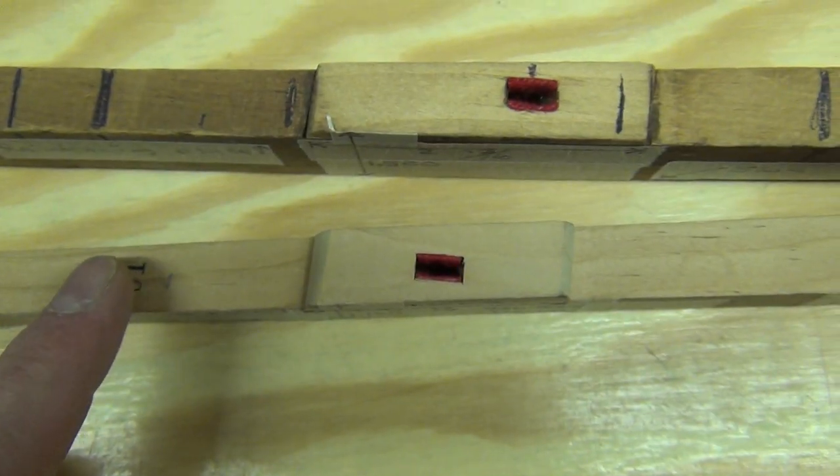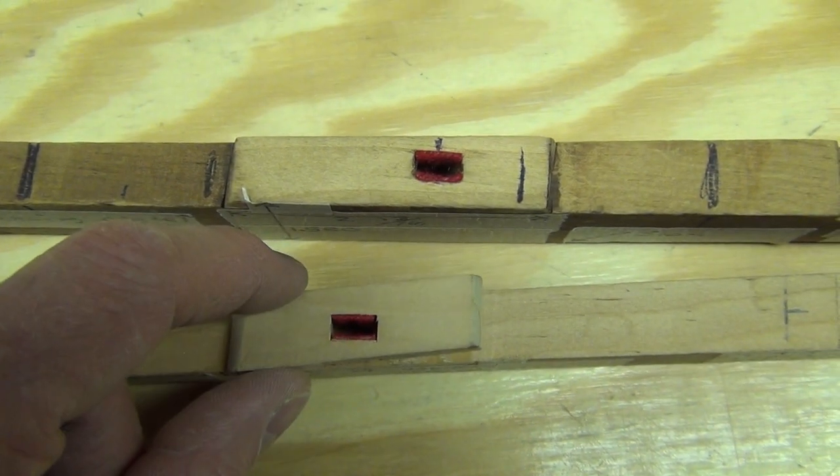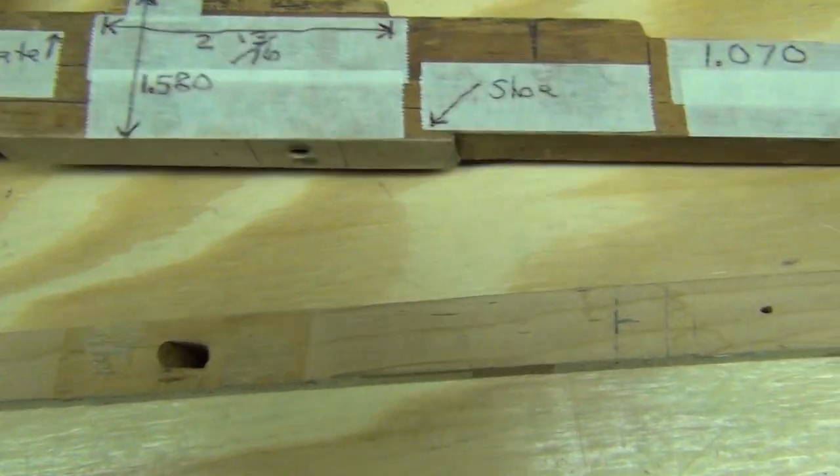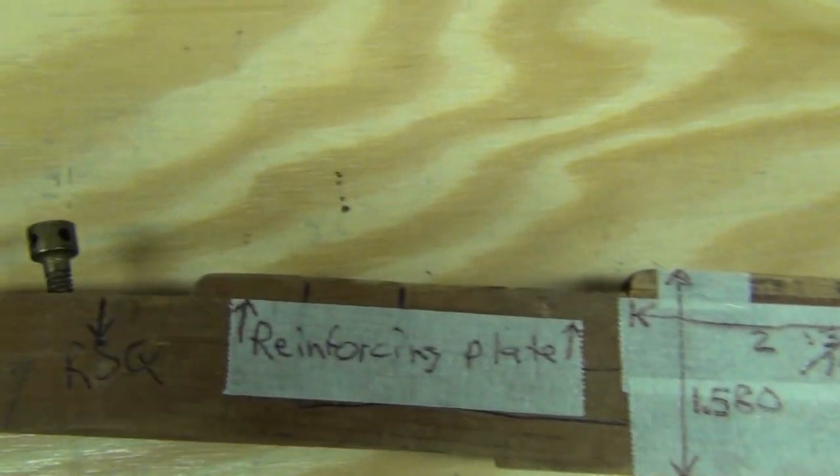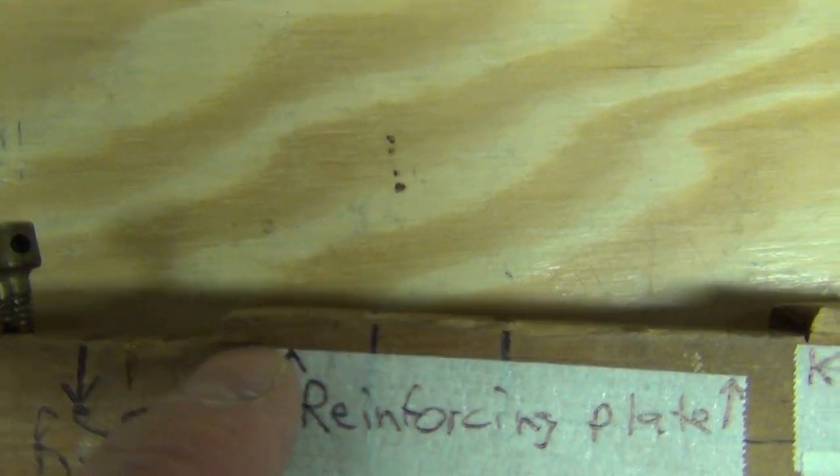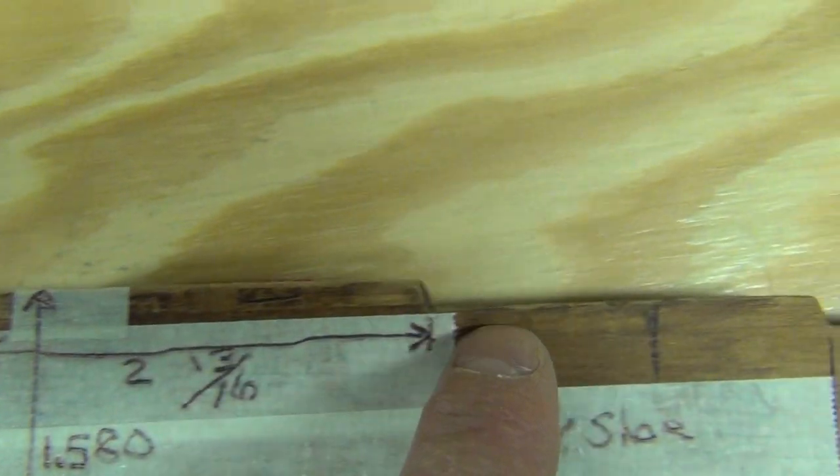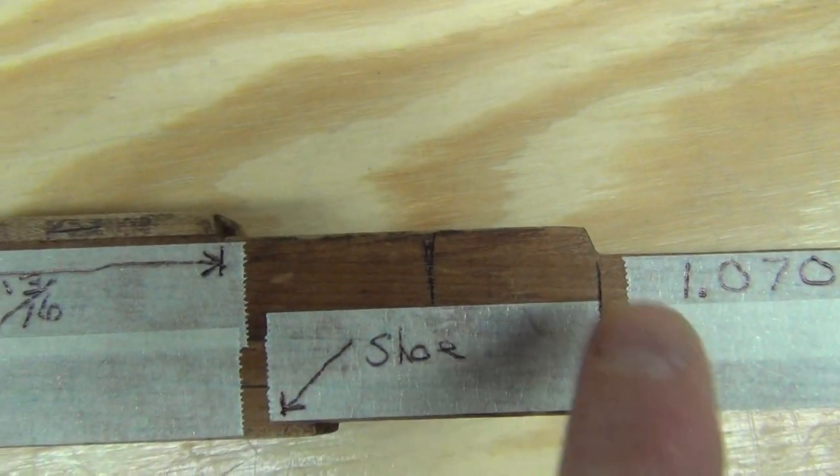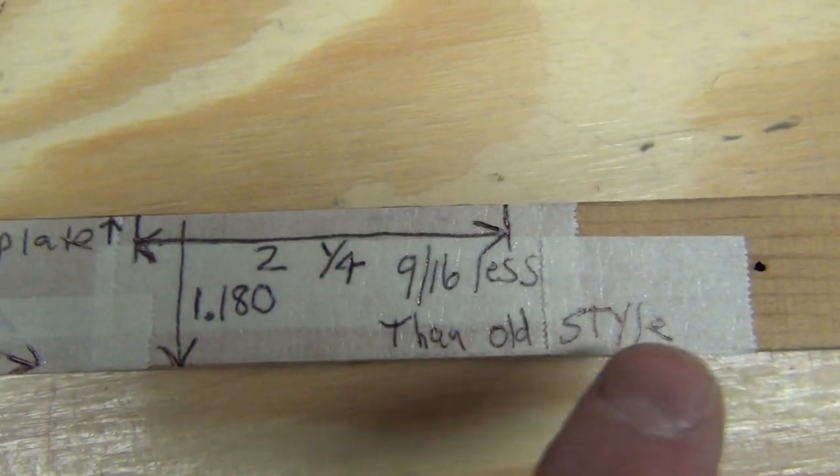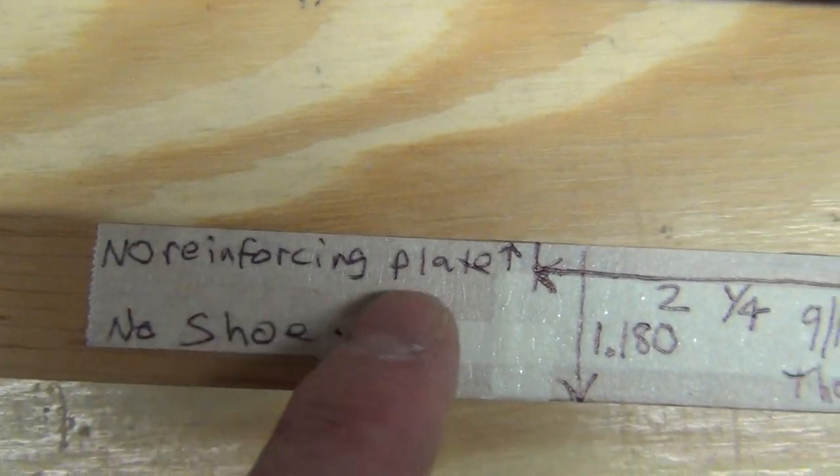So again, it's weakening further an already compromised key. Another thing the manufacturer did was they eliminated this reinforcing plate. It's a very long reinforcing plate. There is no reinforcing plate.